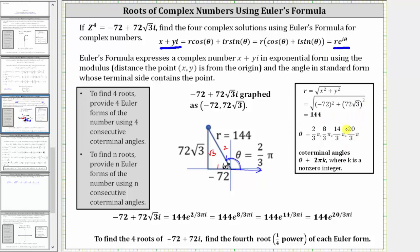Now that we have our four angles and the value of r, we can write four exponential forms for the complex number negative 72 plus 72 square root three i. Notice r equals 144, and theta equals two-thirds pi, eight-thirds pi, 14-thirds pi, and 20-thirds pi.